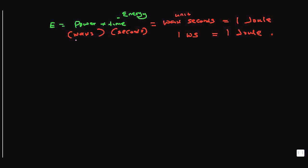If the power is measured in kilowatts and your time is measured in hours, then you would have the unit as kilowatt-hour. One kilowatt-hour is actually one unit of electricity.